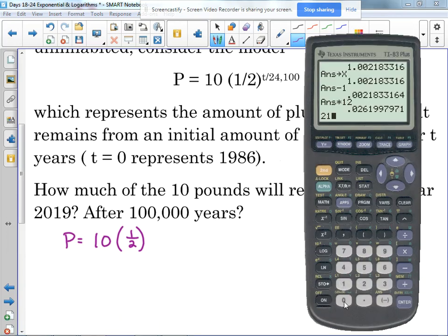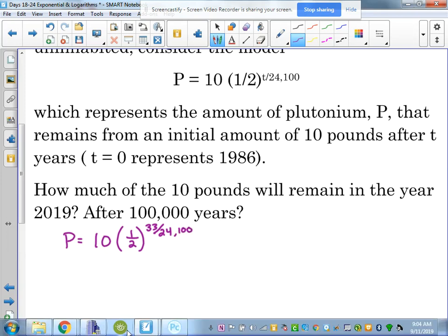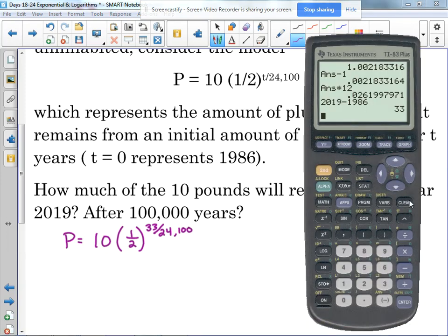So we need to figure out how many years since 1986, and it's going to be 33 years over the 24,100. Now, be careful when you put this into your calculator. First of all, do need parentheses around the one-half. Anytime your base is a fraction, you need to put parentheses around it.